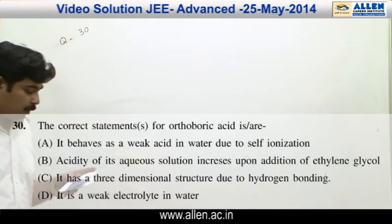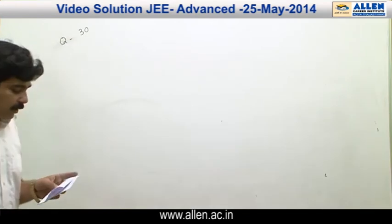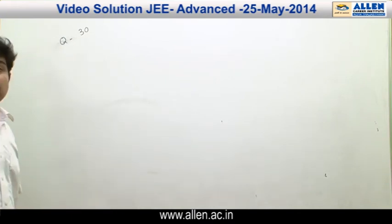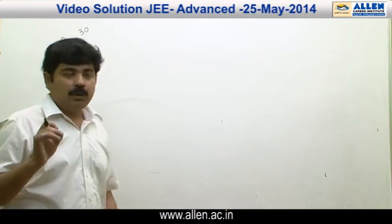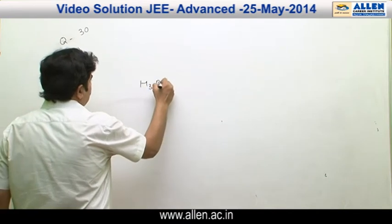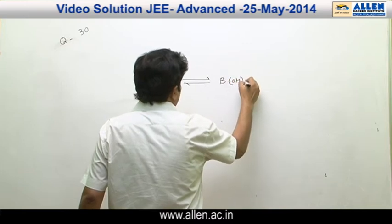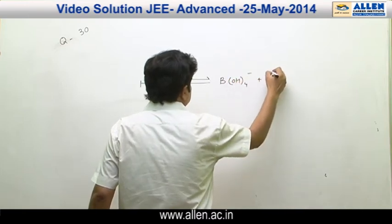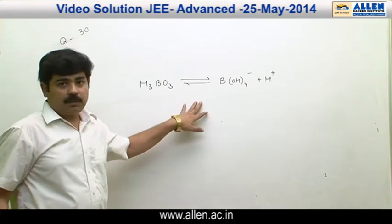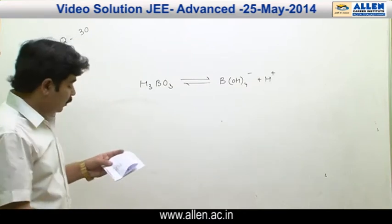Question number 30: The correct statements for boric acid. The first option is it behaves as a weak acid in water due to self-ionization. Boric acid does not undergo self-ionization in water. It ionizes in water in a pattern that is H3BO3 converted into B(OH)4 minus plus H plus. It is a weak acid in water but ionizes like this, that is it does not undergo self-ionization. The first option is incorrect.